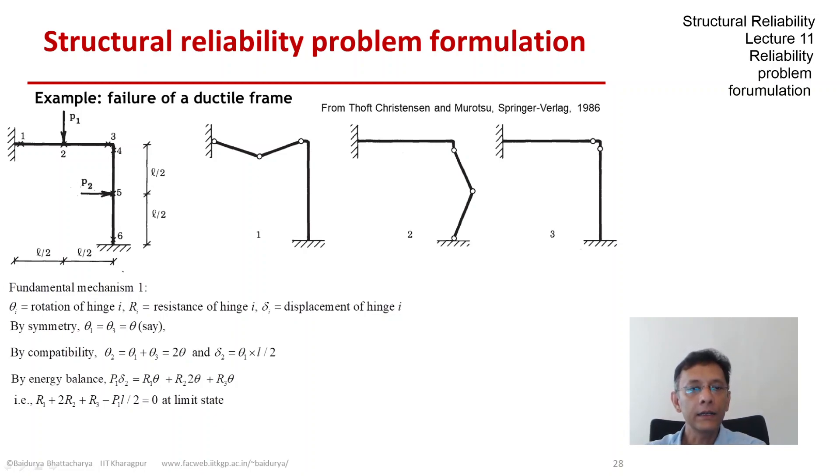Any excess work would imply failure, so we can define any imbalance. We define failure as the external work done being more than the maximum work that can be dissipated by the system. The failure in the first mechanism is given by the inequality that you see on the screen.